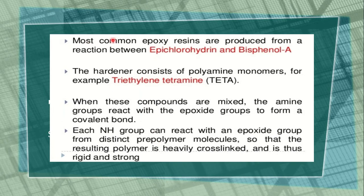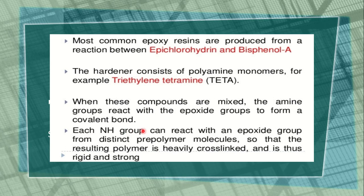Most common epoxides are produced from a reaction between epichlorohydrin and bisphenol A. The hardener consists of polyamine monomers, for example triethylene tetramine (TETA). When these compounds are mixed, the amine groups react with the epoxide groups to form a covalent bond. Each NH group can react with an epoxide group from a distinct prepolymer molecule.